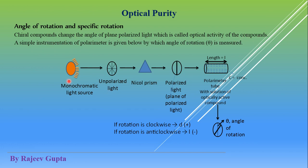In this schematic diagram, we can see a monochromatic light source where only a single wavelength of light is emitted. This light is actually non-polarized light. To convert this non-polarized light into plane polarized light, we use a Nicol prism or specific assembly where unpolarized light converts into plane polarized light.